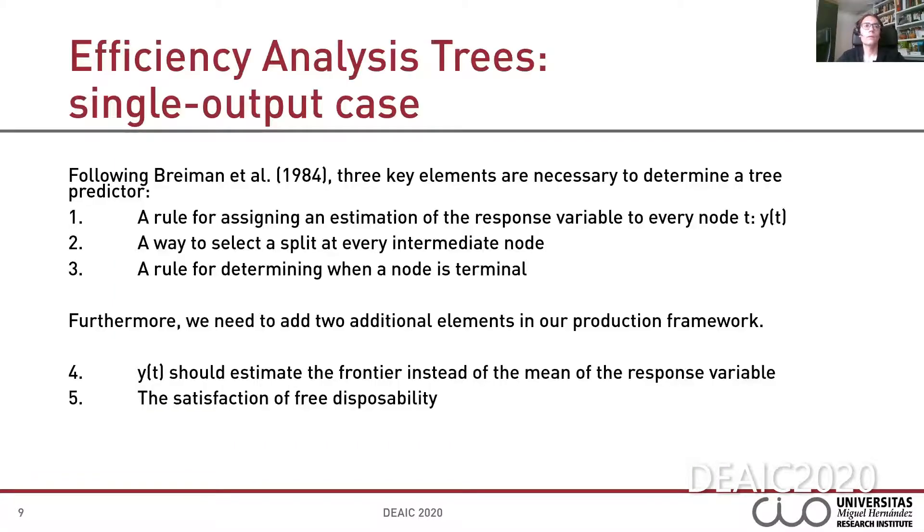Methodological aspects. In this part of the presentation, we introduce a new technique based on the adaptation of CART for the estimation of production frontiers, which will be called Efficiency Analysis Trees. We will start with the single output production context. Following Breiman, three key elements are necessary to determine a predictor. The first one, a rule for assigning an estimation of the response variable to every node t, yt. A way to select a split at every intermediate node. And third, a rule for determining when a node is terminal.